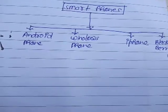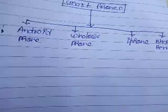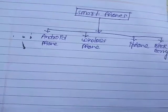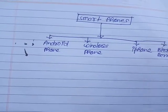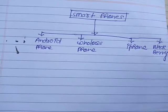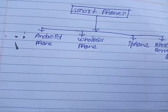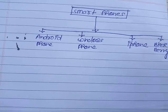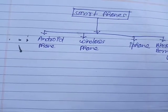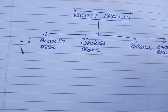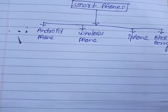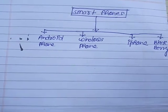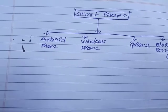Firstly, I will explain what a smartphone is. The definition of a smartphone: such type of phones which can do nearly all operations which a computer can do is known as a smartphone. In simple words, the functionality related to a computer is built into mobile phones — then it becomes a smartphone.